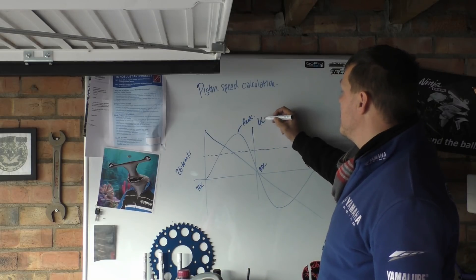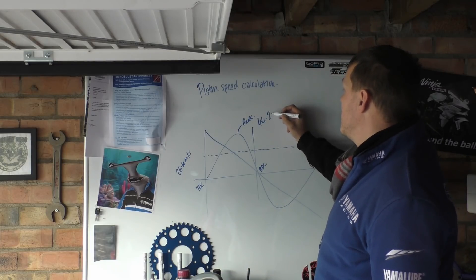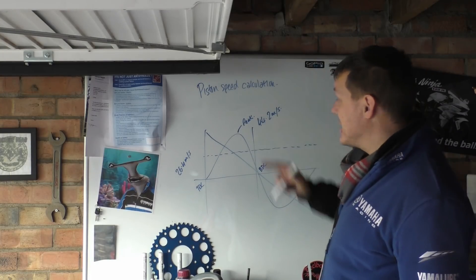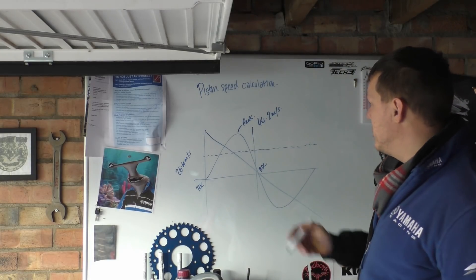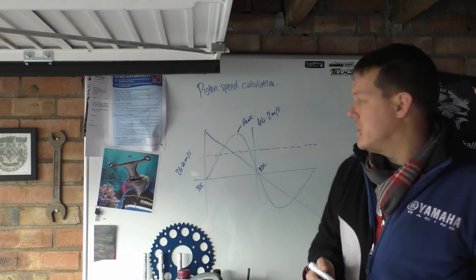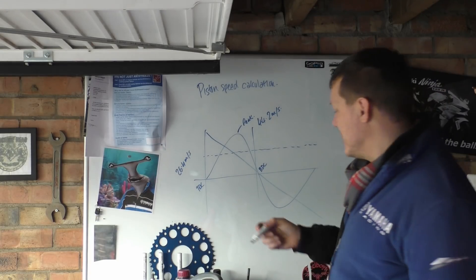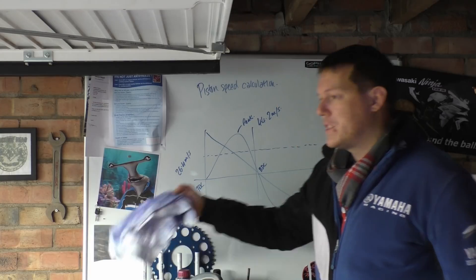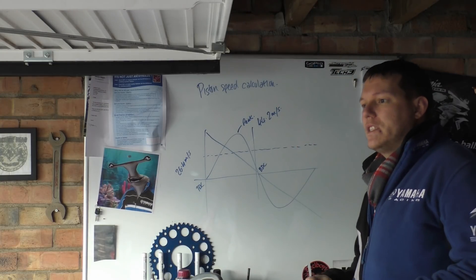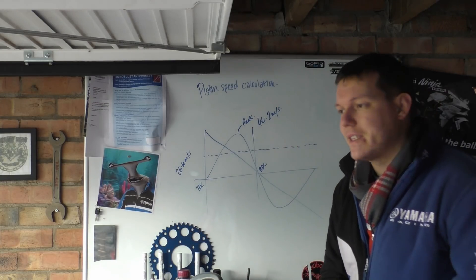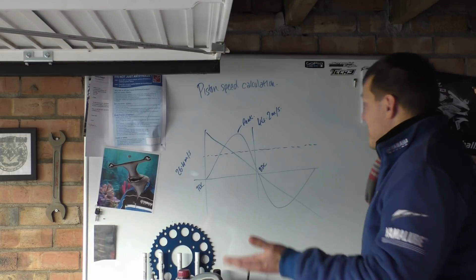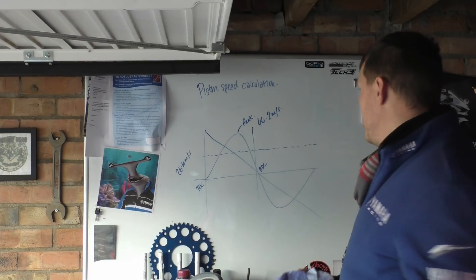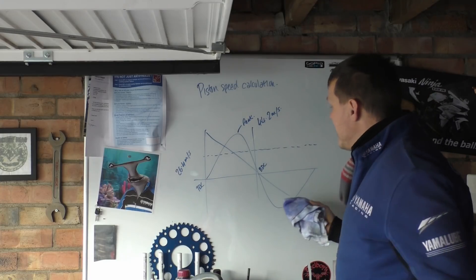44.2 metres per second — that is our maximum speed. As you can see, it's nearly double the average speed. So when you hear people say piston speeds shouldn't go over 30 metres per second, that is just an average. The SV's piston speed at 12,000 RPM is actually going 44 metres per second.